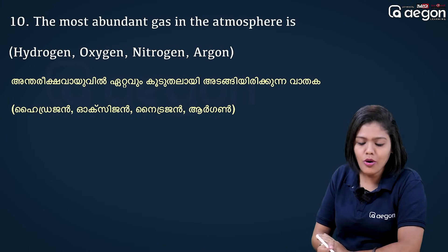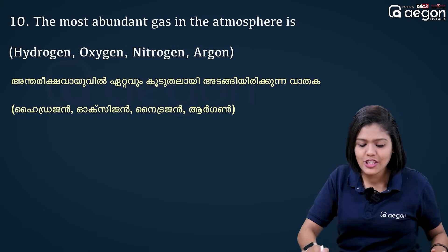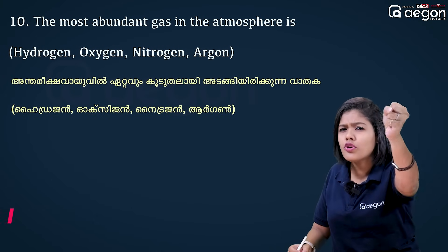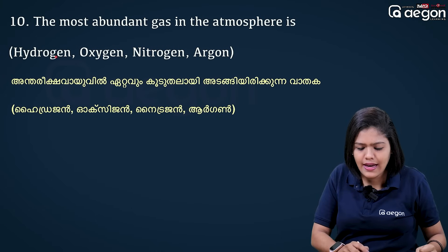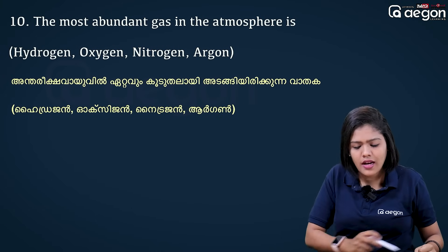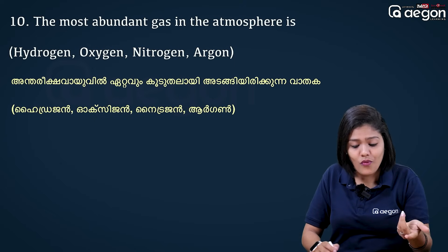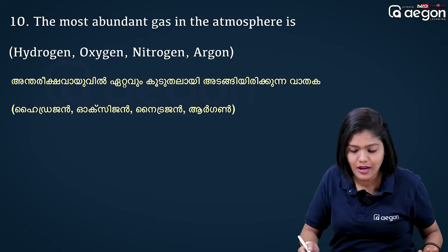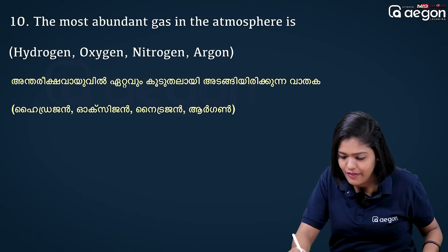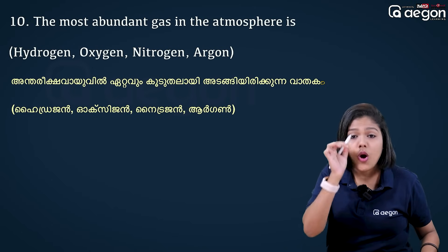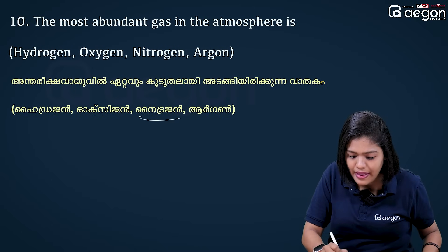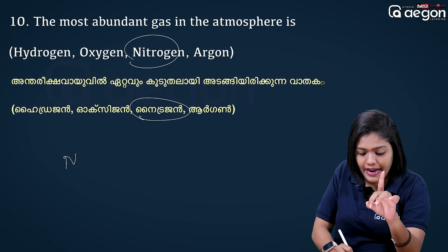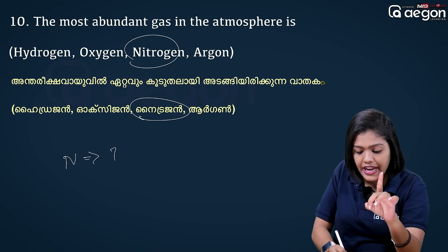The most abundant gas in the atmosphere is nitrogen. The options are hydrogen, oxygen, and nitrogen. Nitrogen makes up 78% of the atmosphere. The second most abundant gas is oxygen at 21%.